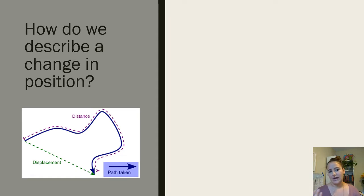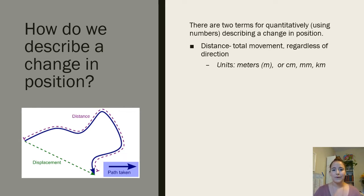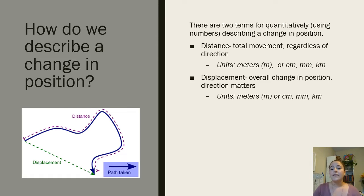First thing: how do we describe a change in position? There are actually two terms that we use quantitatively — that means using numbers — versus qualitatively, which is just describing. For quantitatively describing a change in position, the first is distance. This is probably what you guys are used to. When you plug in an address into your GPS, it tells you how much distance you have to cover to get there. It's your total movement regardless of direction, normally in units of meters, but could be centimeters, millimeters, kilometers, or miles.